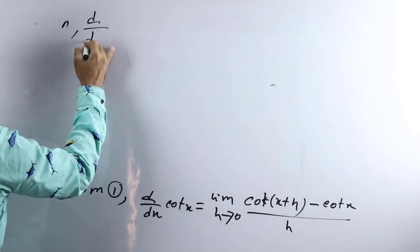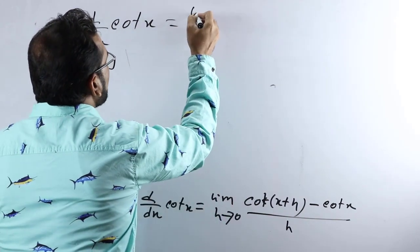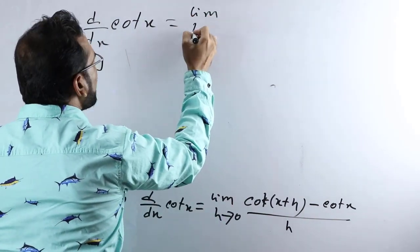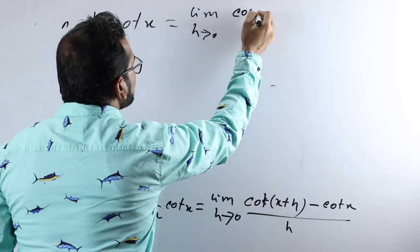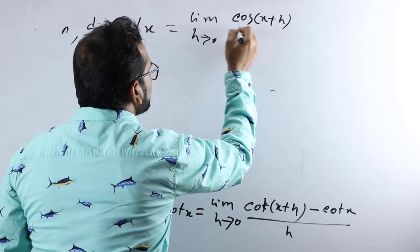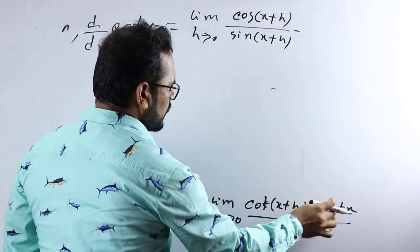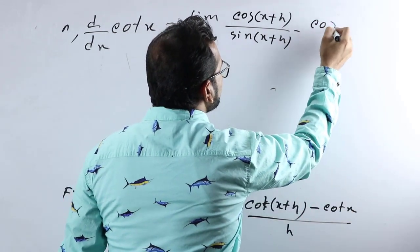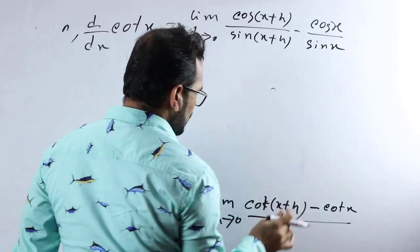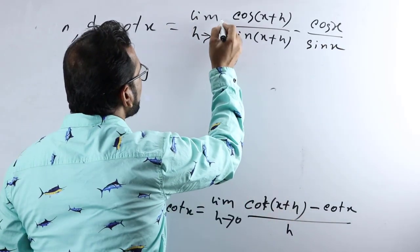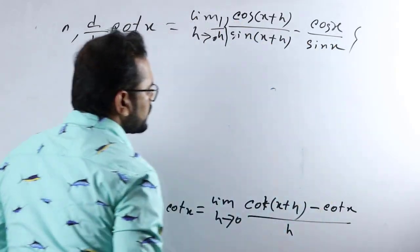Expanding cot in terms of cos and sin: d/dx of cot x equals limit h tends to 0, cos(x+h) divided by sin(x+h), minus cos x divided by sin x, all divided by h.